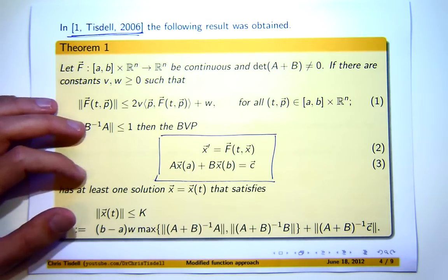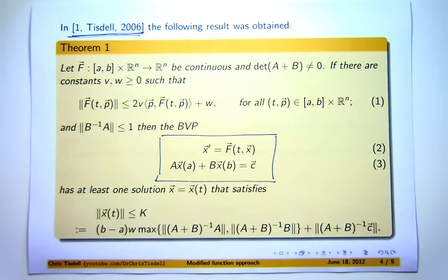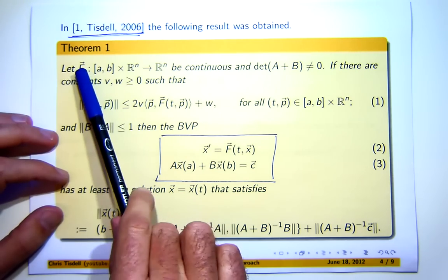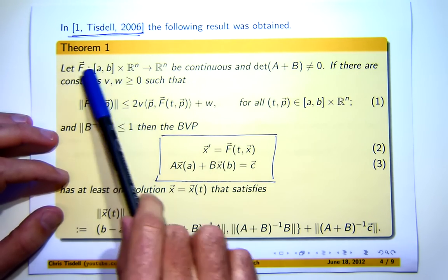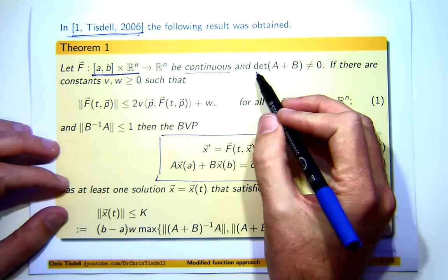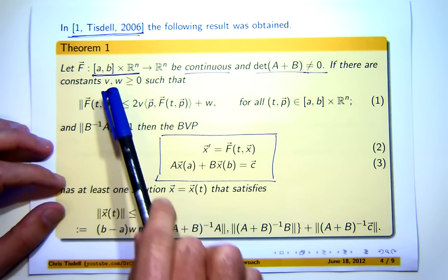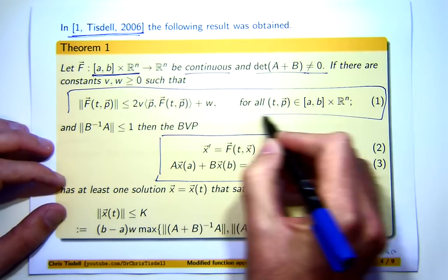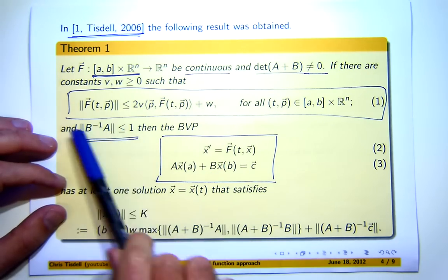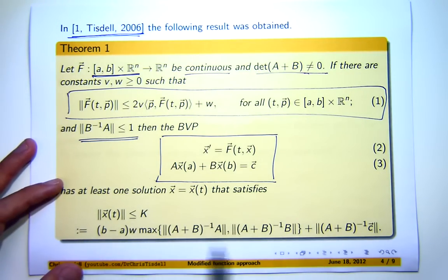You couple them together and you get what's known as a boundary value problem. Now here, big A and big B are n by n matrices, this C bar is just a constant vector. A and B are real numbers, A less than B. Now the theorem in this paper is as follows. Suppose this vector valued function, big F, is defined on this whole set here and that it's continuous. In addition, assume that the determinant of this sum of matrices is non-zero. If there are non-negative constants, little v and little w, such that big F satisfies an inequality like this on this whole set and this inequality is satisfied, then this boundary value problem has at least one solution that satisfies this a priori bound.